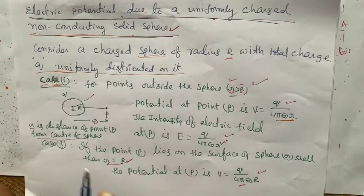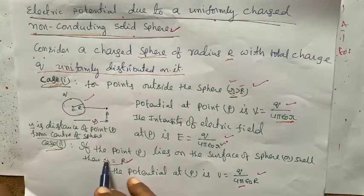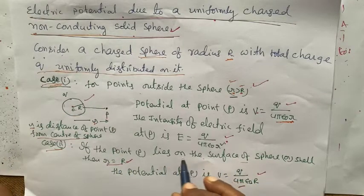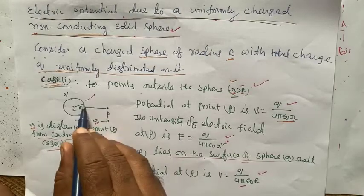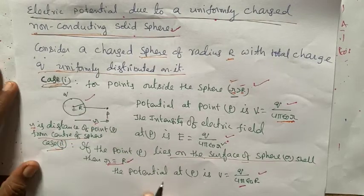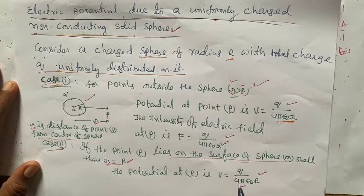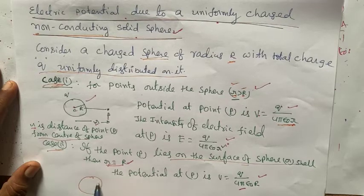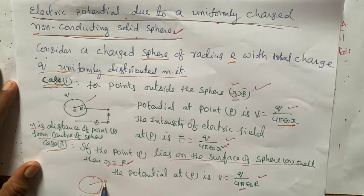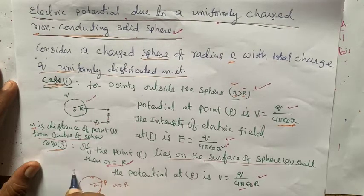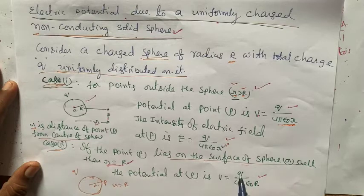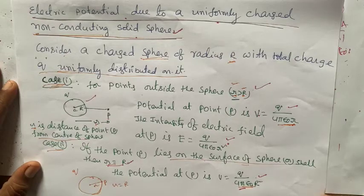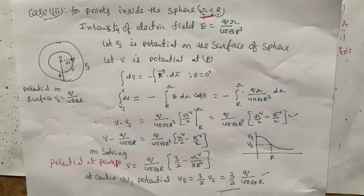Case 2: If point P lies on the surface of the sphere. Potential at point P is V equals Q divided by 4 pi epsilon r, where small r equals capital R. So the potential on the surface equals Q divided by 4 pi epsilon capital R.